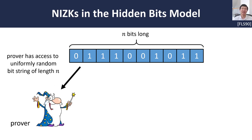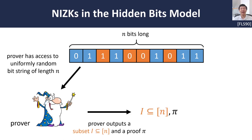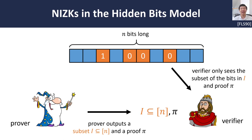The starting point of all of our constructions is a non-interactive zero-knowledge proof in what's called an idealized model called the hidden bits model, introduced in the work of Feige, Lapidot, and Shamir. In this model, we assume that the prover has access to a uniform random bit string of length N. Given this uniform random bit string, the prover can choose a subset of the bits and produce a proof π. Both this subset, as well as the proof π, is then given to the verifier, along with the values of the bits in the subset chosen by the prover. The remaining bits that are not chosen by the prover are completely hidden, hence the name hidden bits string.